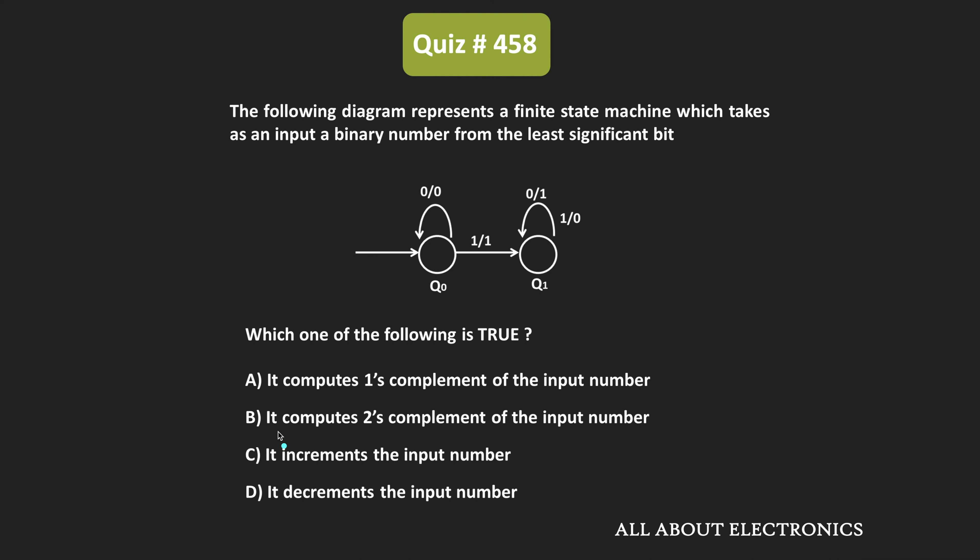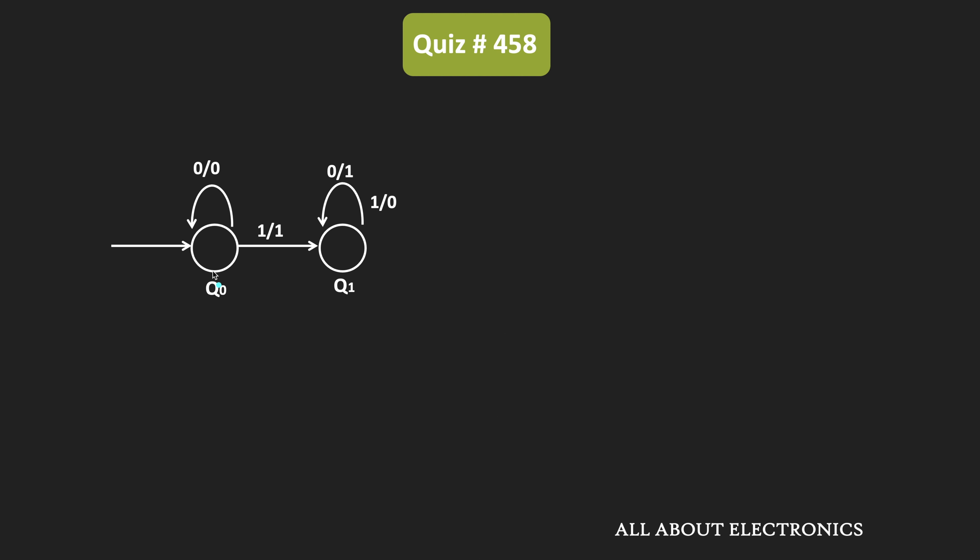In this question, we have been given the state diagram of a finite state machine, and we have been given that this machine takes the binary number as an input starting from the least significant bit. We have been asked to find the functionality of this finite state machine from the given state diagram.